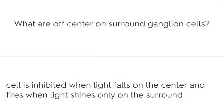What are off-center and on-surround ganglion cells? The cell is inhibited when light falls on the center and fires when light shines only on the surround.